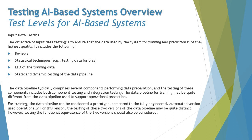Data can be reviewed before it is used, and there are static and dynamic testing approaches for data pipelines. This is very crucial because if AI systems do not have appropriate test data, the AI-based system may not behave as expected. The data pipeline typically comprises several components performing data preparation, and testing of these components includes both component testing and integration testing.